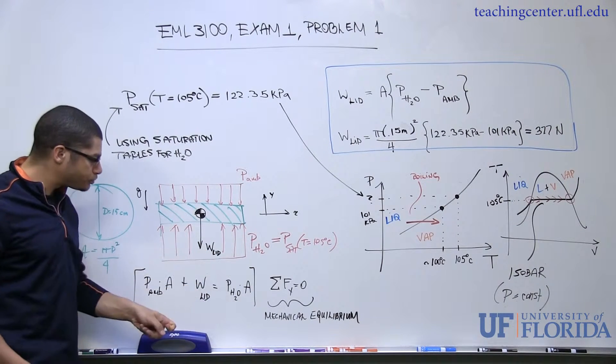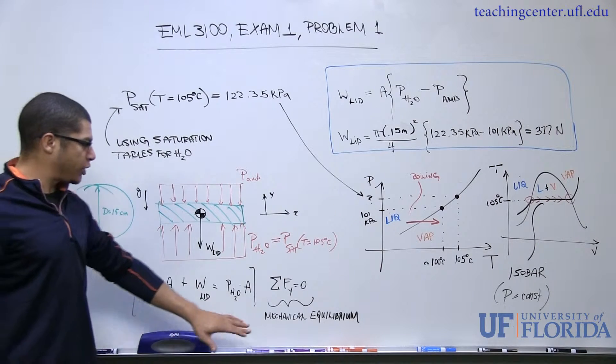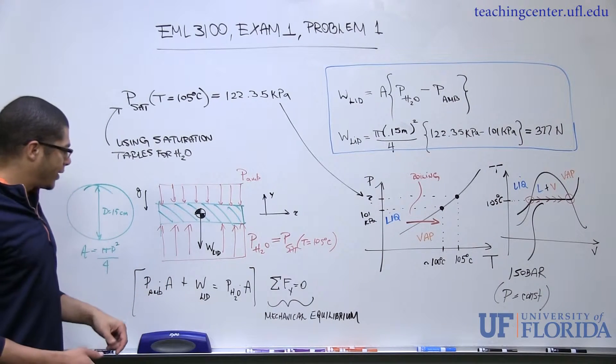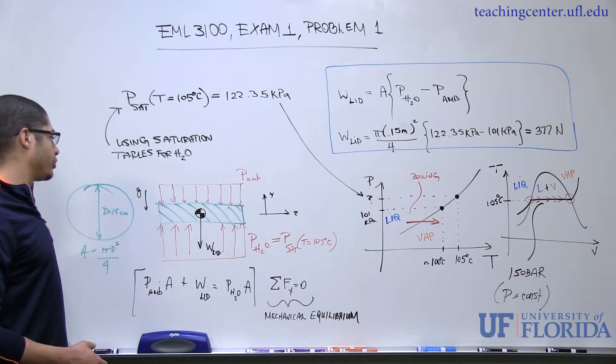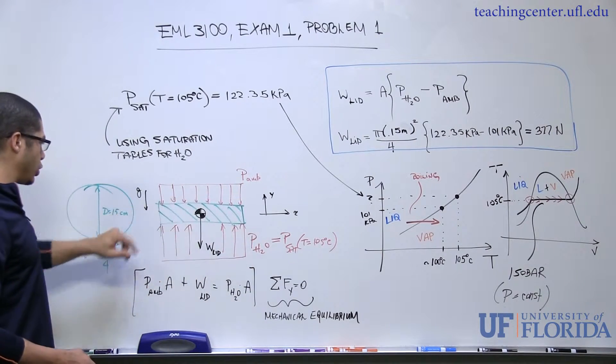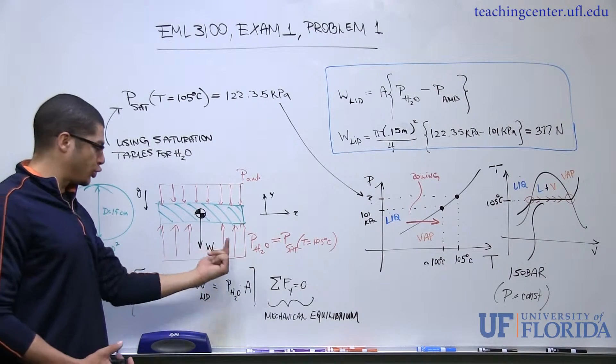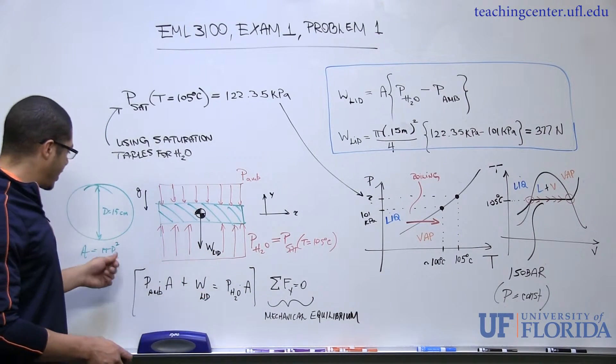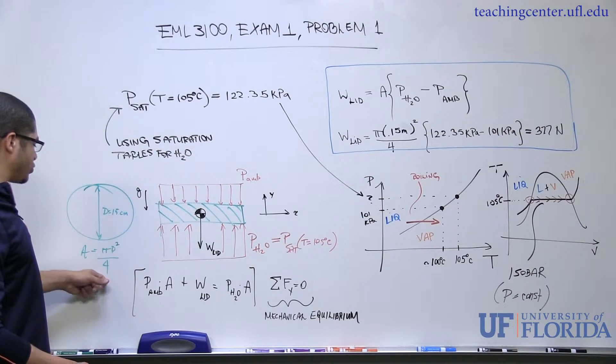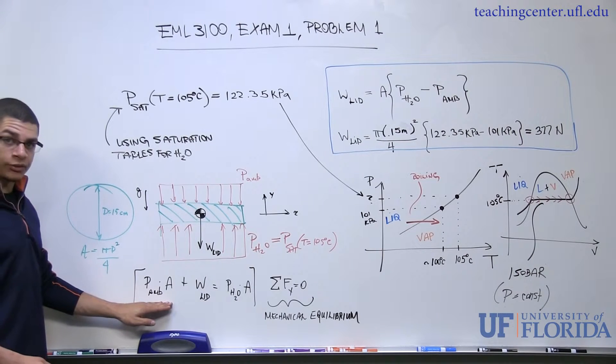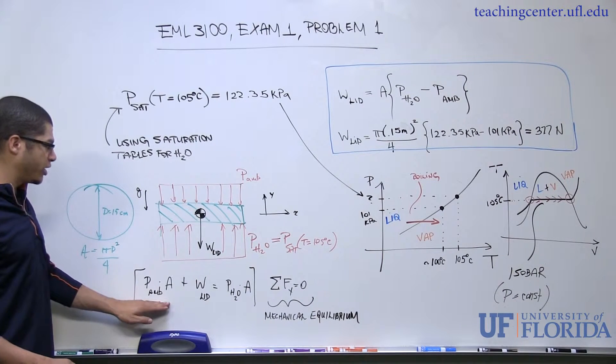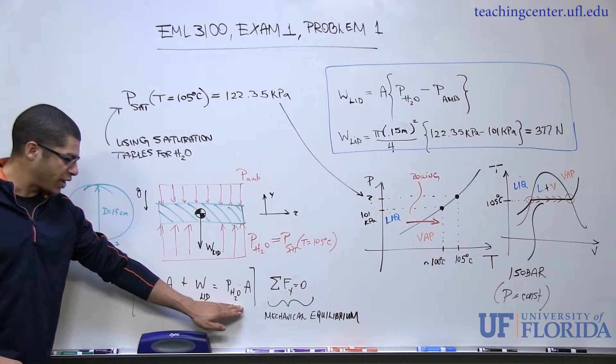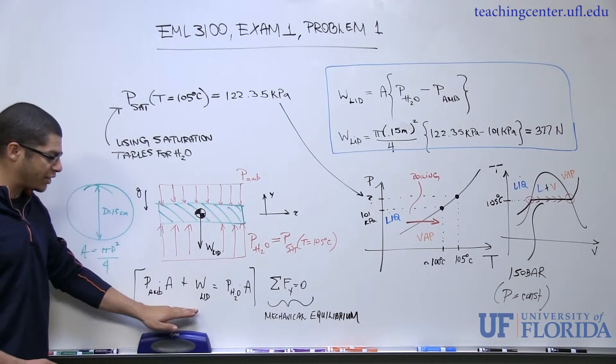The weight of the lid is acting down as W_lid. So if I just apply this mechanical equilibrium constraint that sum of the forces in the Y direction are equal to zero, I have two forces acting downward. So I've got the ambient pressure distributed load acting on the wetted area, which is a circle because we're dealing with a cylindrical pot of a diameter of 15 centimeters. And the area is nothing more than pi D squared over 4. So this is one force acting down. We have P_ambient times that wetted area plus the weight of the lid. And then the vapor pressure or the saturation pressure acting on that same wetted area in the upward direction must balance these two forces.